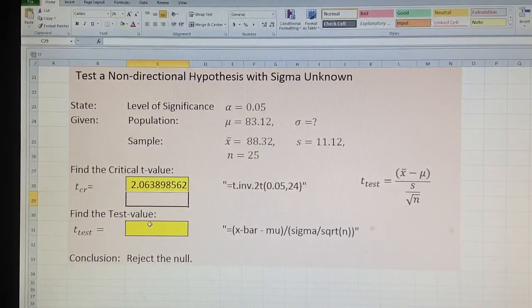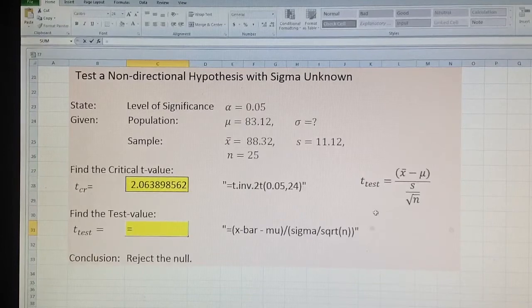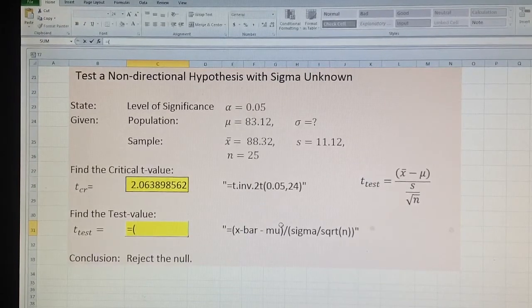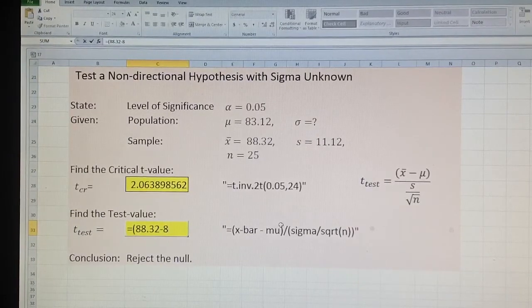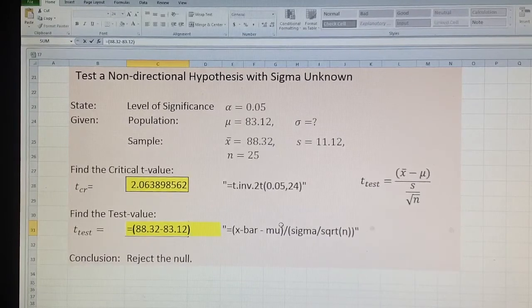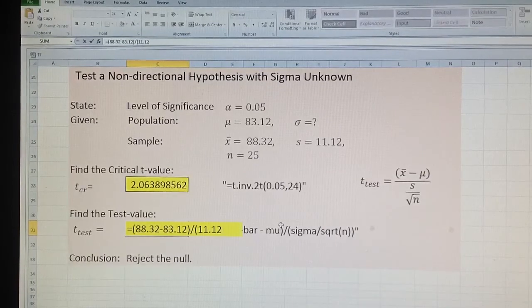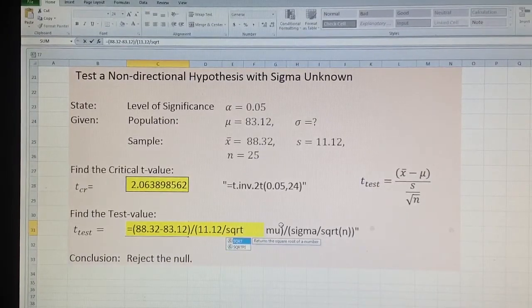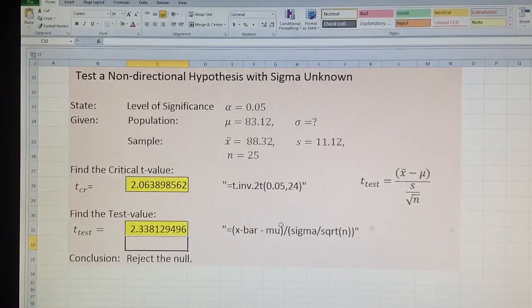So this is my T critical, a little larger than the Z critical. T test. This is the formula for T test. It is equal x̄, which is 88.32 minus 83.12 divided—this time instead of sigma, S, 11.12 divided by square root SQRT of 25. Close parenthesis, close the denominator. Again, T test is larger than the T critical, 2.06 is less than 2.38.